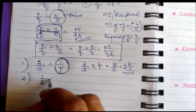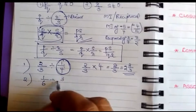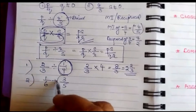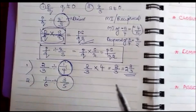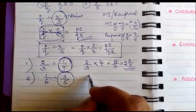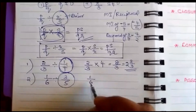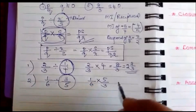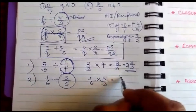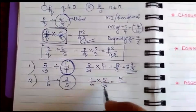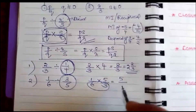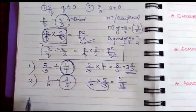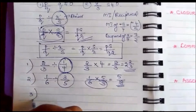Second example: 1/6 divided by 3/5. You use the multiplicative inverse of the second number: 1/6 × 5/3 = 5/18.